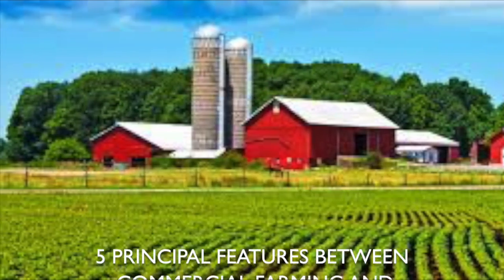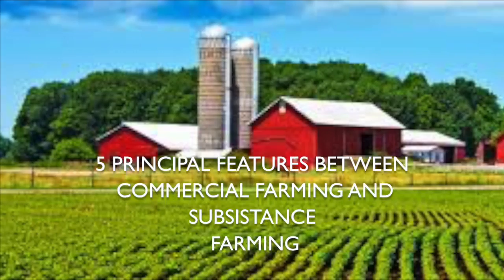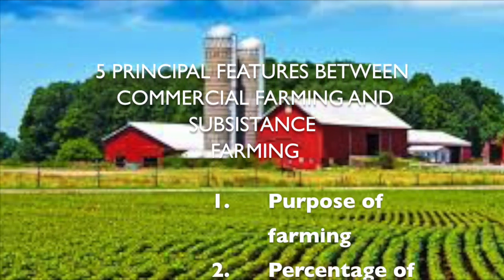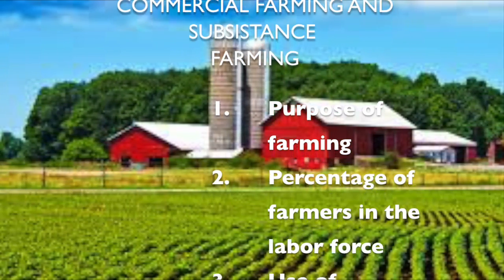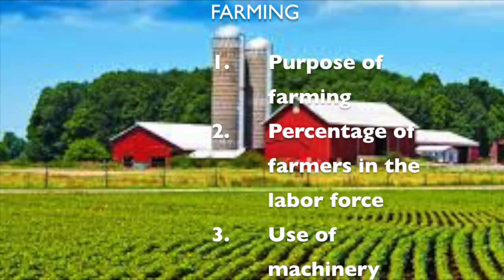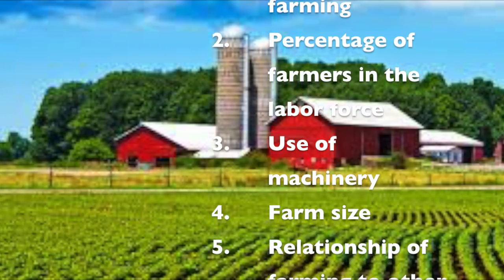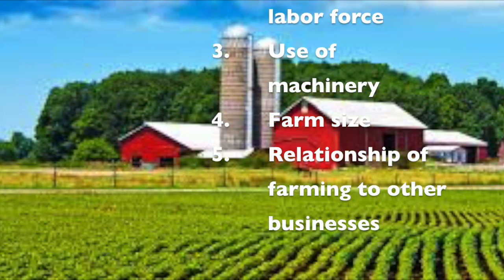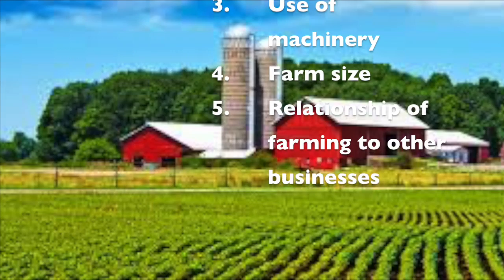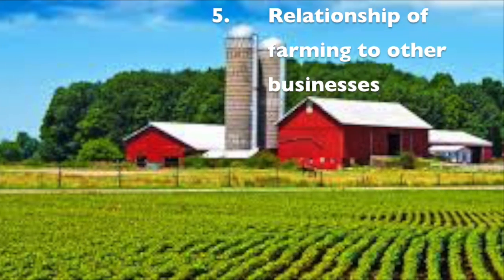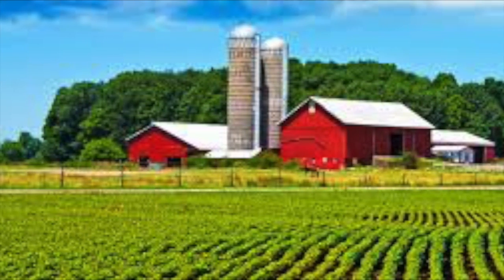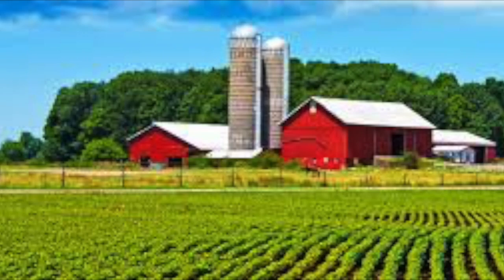There are five distinguishing features between subsistence agriculture and commercial agriculture: first, the purpose of farming; second, the percent of farmers in the labor force; third, the use of machinery on these farms; fourth, the size of the farms; and fifth, the relationship of farming to other businesses. The rest of the key issue breaks each one of these down in more detail.